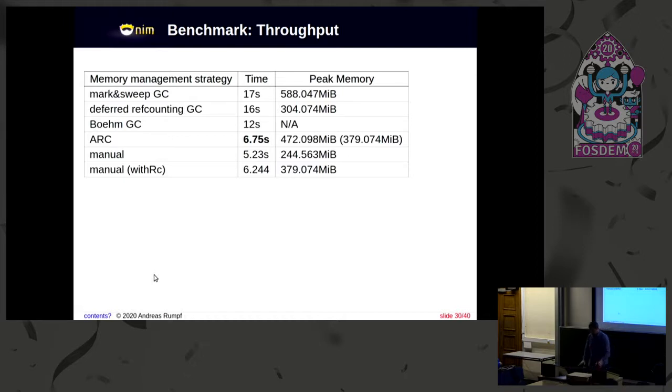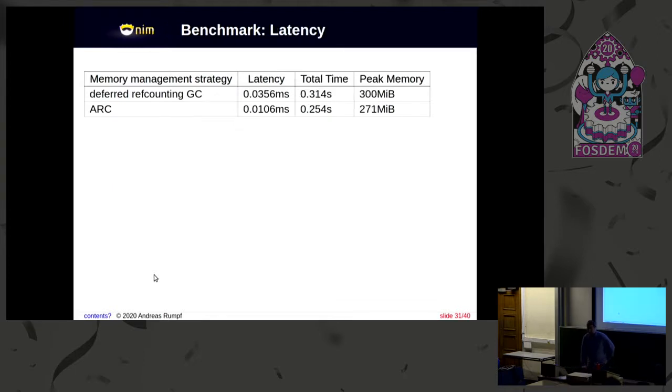There's a different benchmark for latency. I don't have the source code for this. But previously, we had a soft real-time garbage collector, and the latency was 0.03 milliseconds for this benchmark. And now, with ARC, it's better by over a factor of three. The total runtime has been reduced also. And the peak memory consumption is also better. So not just throughput is better, but also latency.